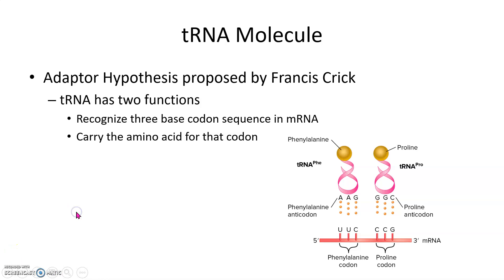Now we're going to talk about the tRNA and rRNA molecules, which have a large part to play in translation. First, there was an adapter hypothesis put forth by Francis Crick, in which he said that the position of an amino acid within a polypeptide is determined by the binding between the mRNA and an adapter molecule that carries an amino acid. This adapter we now know is tRNA.